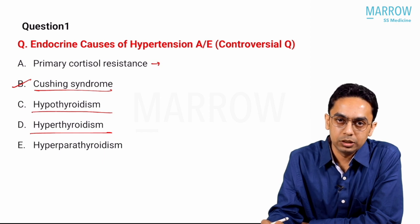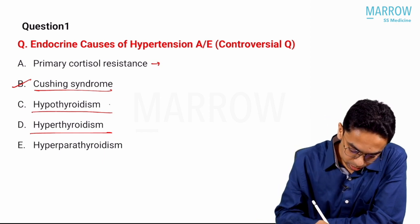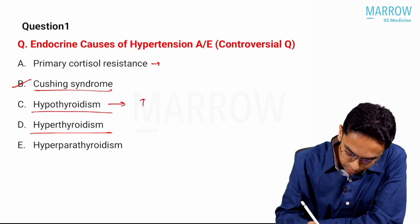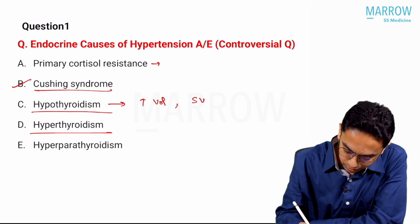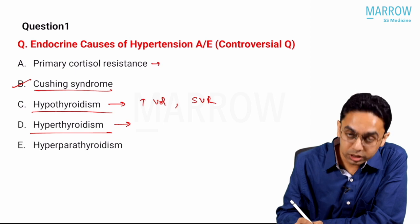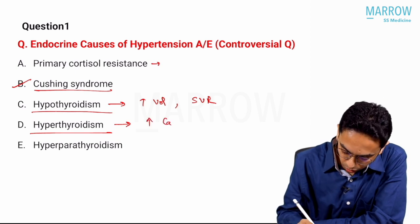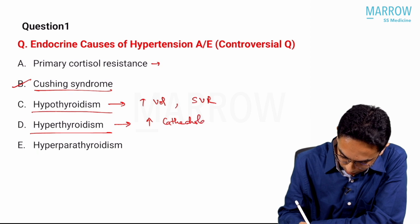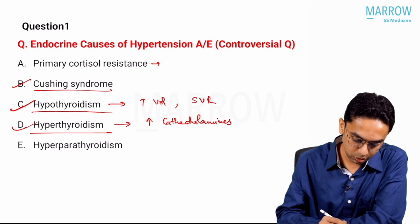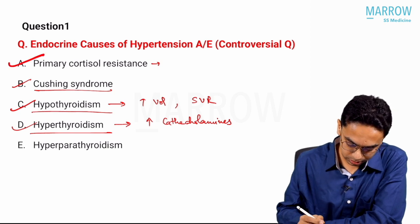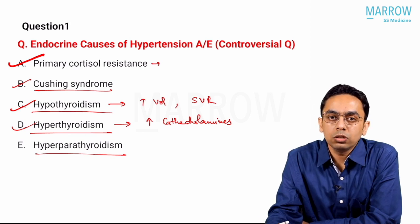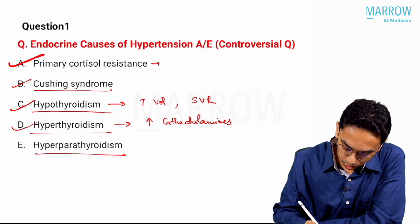Hypothyroidism and hyperthyroidism are also causes of systemic hypertension. Hypothyroidism increases the volume and also increases systemic vascular resistance. Regarding hyperthyroidism, it increases the sensitivity of catecholamines. So both are causes of endocrine hypertension.